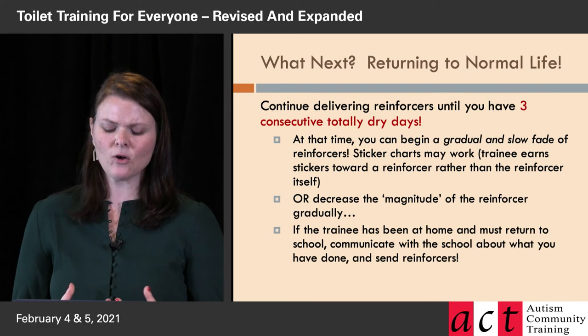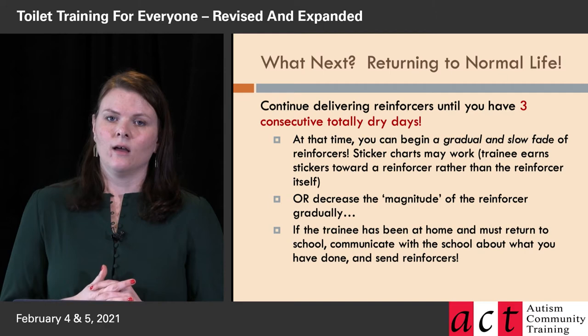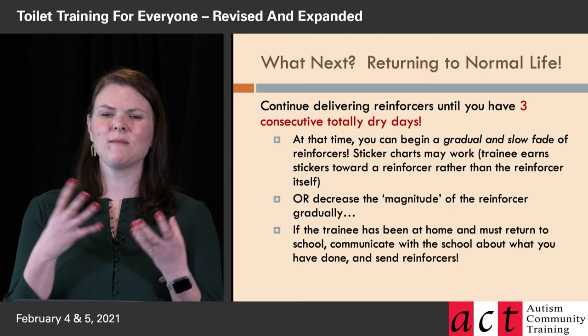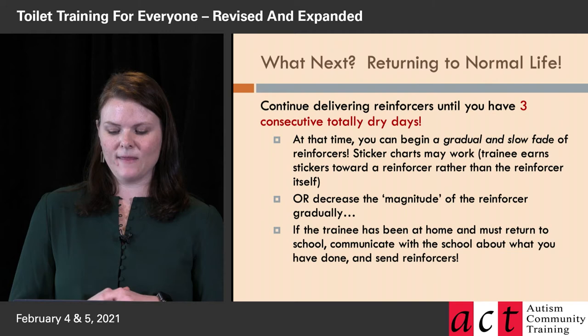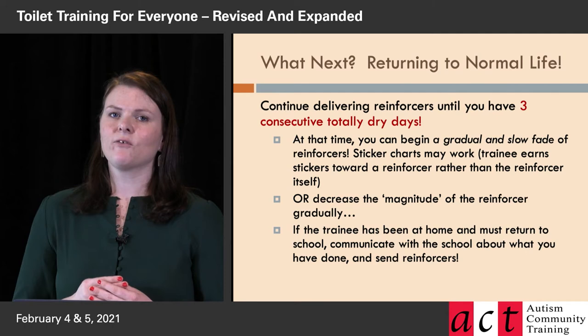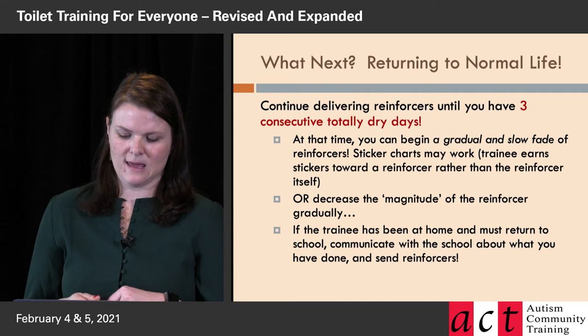With some trainees you need to keep giving something every time, so another thing we'll do is decrease the magnitude of the reinforcer — how powerful it is. Say they've been earning 10 gummy candies after every pee. At this stage you might start going to nine, then eight, then seven — giving them a bit less volume and excitement. Or if they were using a crane machine to get prizes, maybe at first they got three coins, but now they only get one, then they start having to earn stickers to get their one attempt. A slow fade is really key.